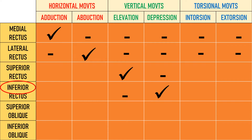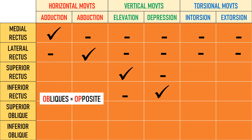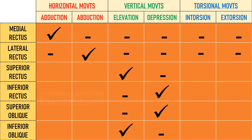The obliques work opposite to their names. The way to remember this is that O stands for opposite — obliques work opposite. Superior oblique is a depressor because the opposite of superior is inferior. Similarly, inferior oblique is an elevator because the opposite of inferior is superior. Recti work as their name suggests and obliques work opposite to their names.